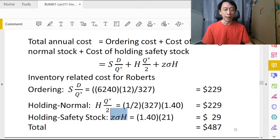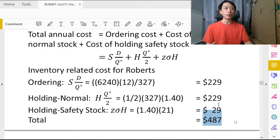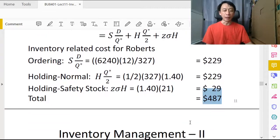And that's going to be $29. Adding them up will give us $487. So that rounds up the example for continuous review with dynamic demand.